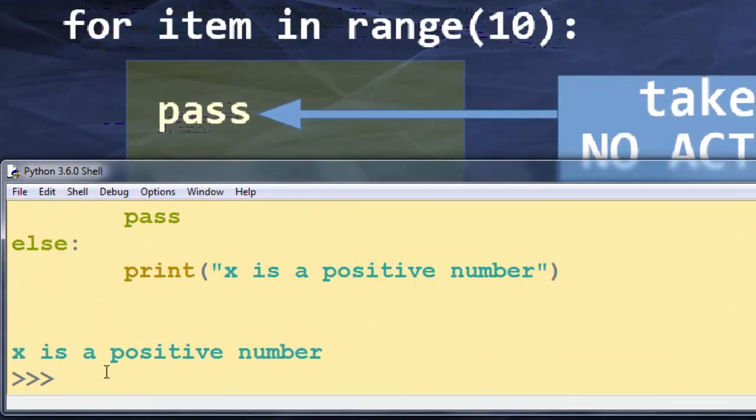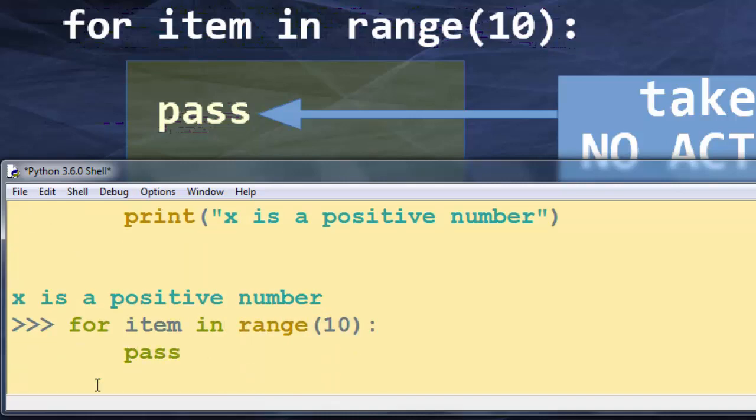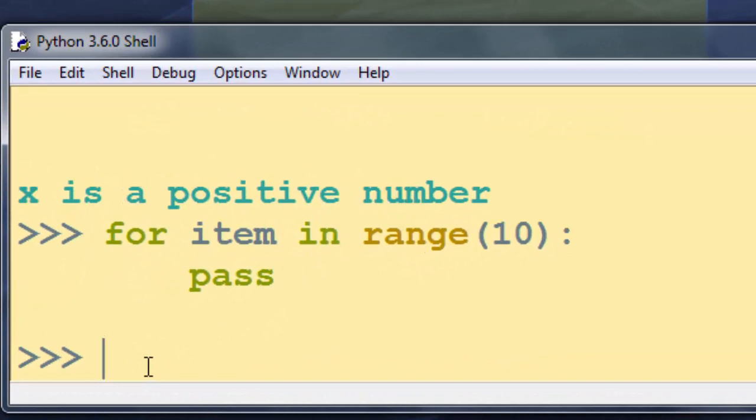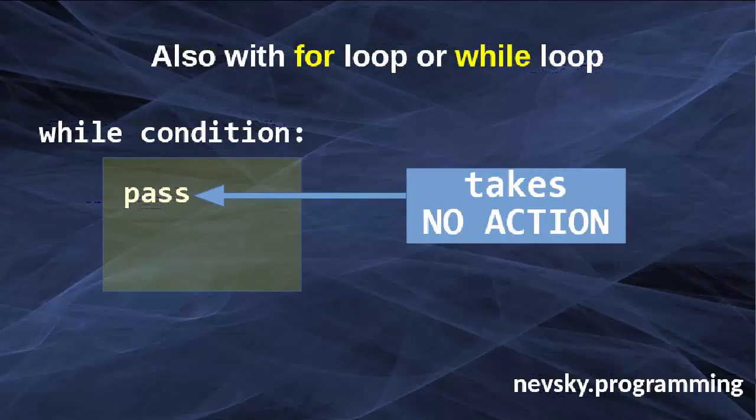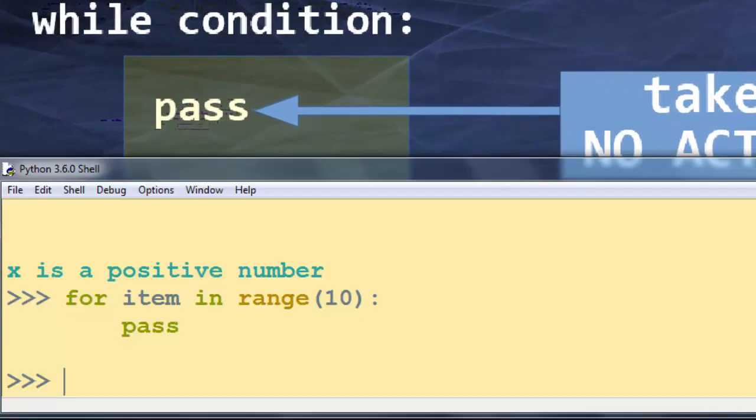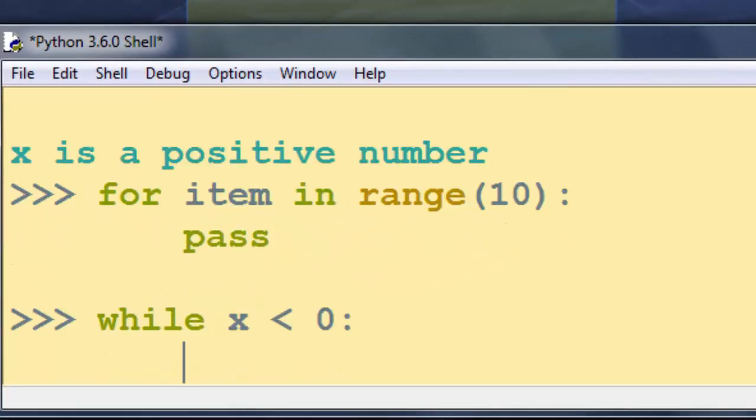I'm going to type this example: for item in range 10, pass. So this for loop is not going to do anything. And also it's the same situation with while loop. I'm going to make a simple example, for example while x is less than zero then we're not going to do anything.